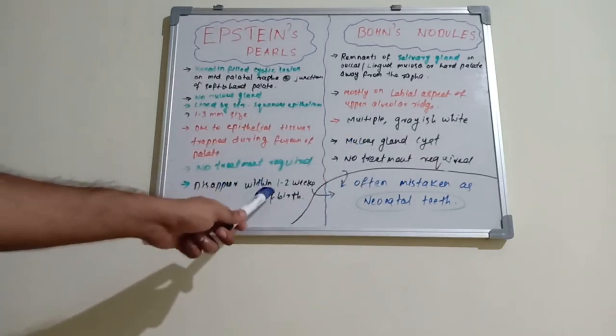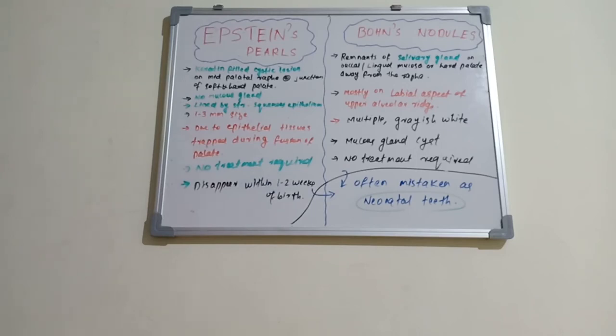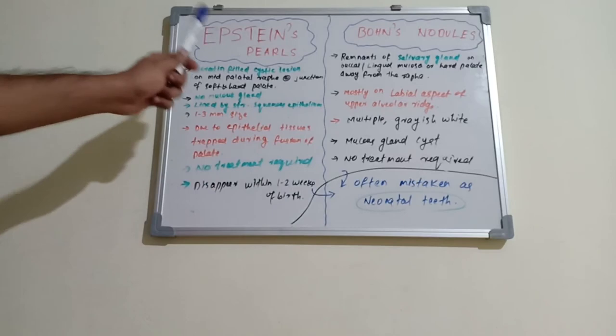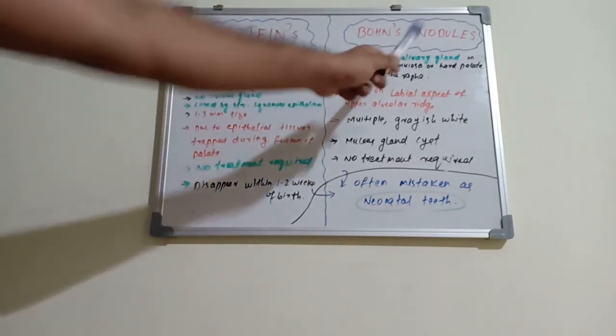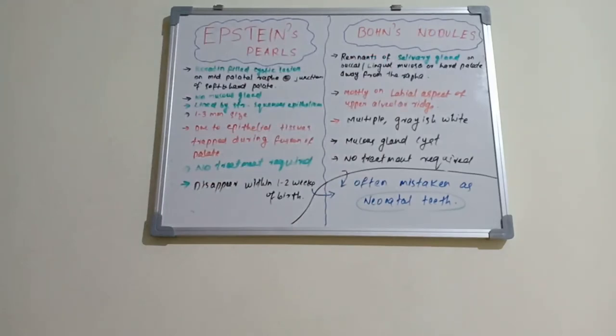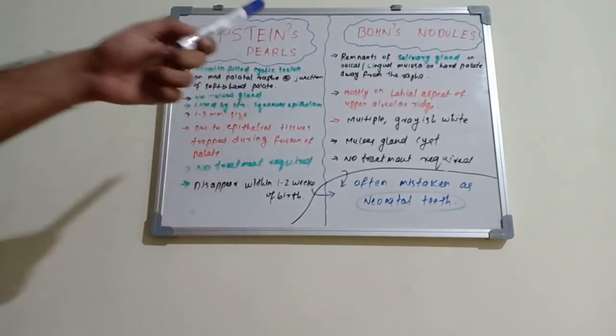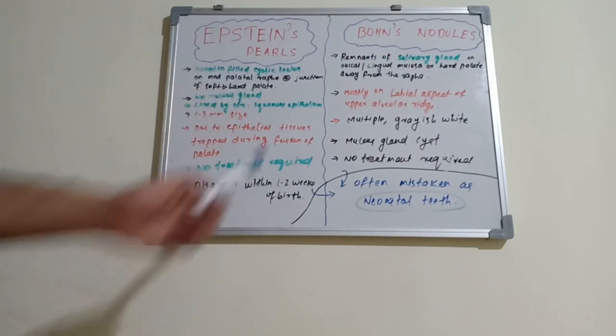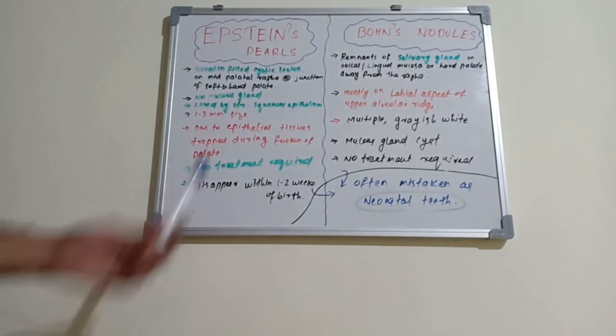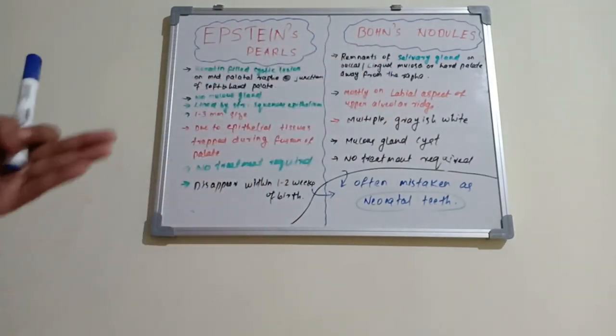So this is a self-limited lesion and it is often mistaken as neonatal teeth. So that is Epstein pearls and Bohn's nodules. Epstein pearls, there is no mucous gland; Bohn's nodules have salivary glands. Epstein pearls are in the palate exactly at the midline raphe, soft and hard palate junction. Bohn's nodules are on the labial aspect of upper alveolar ridge or labial or lingual mucosa or even hard palate but away from the raphe.